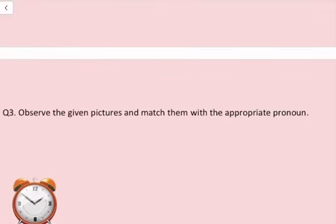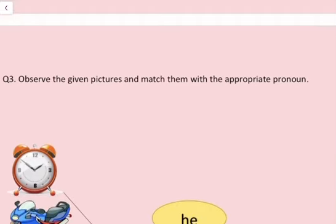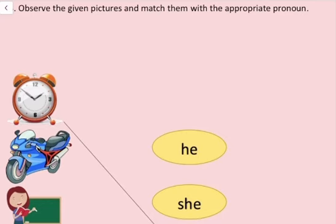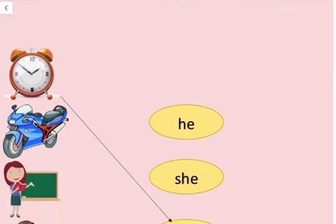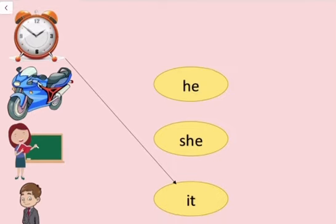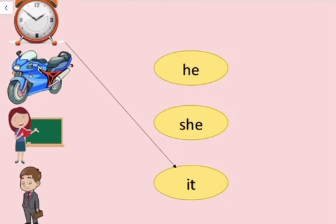Question number 3. Observe the given picture and match them with the appropriate pronoun. Humay picture ko dekhte hoi, us ko uchit pronoun se match karna hai. For example, clock. Clock ke liye hum it use karate hai. Number 2. Bike. Bike ko bhi hum it use karenge.